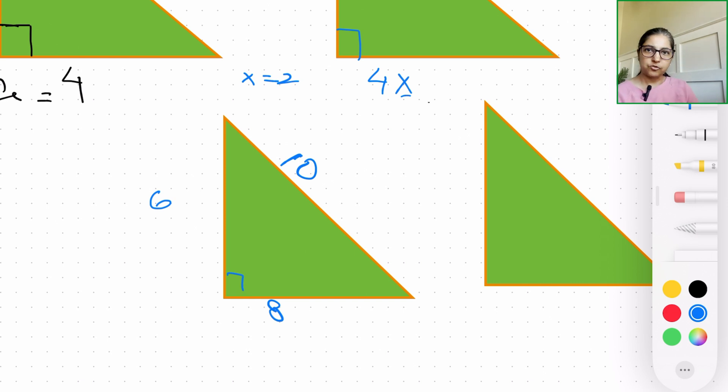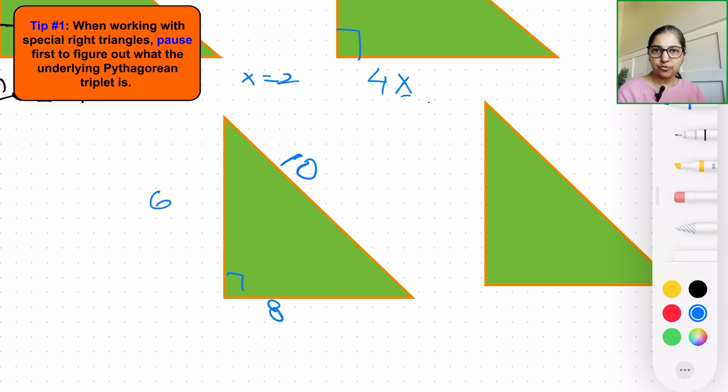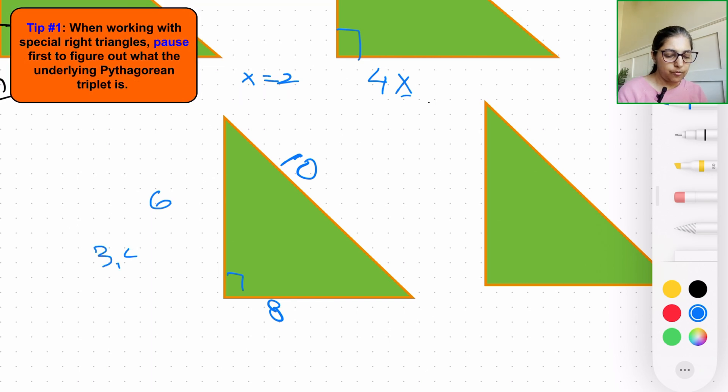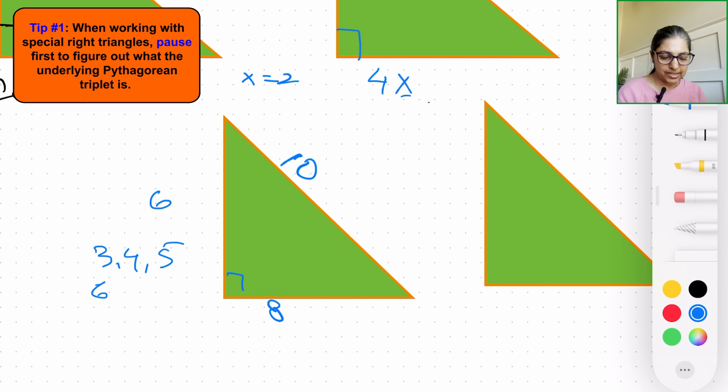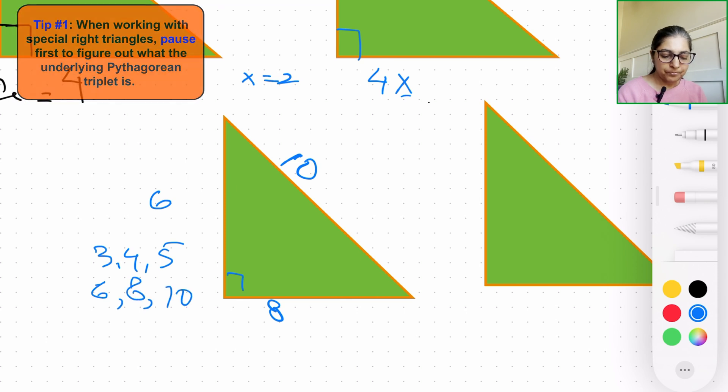So when you come across these kinds of formations or the side lengths on a right angle triangle, what we need to identify and what will help is: what type of special right triangle is it? Is it a 3-4-5 or like 6-8-10?